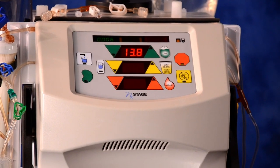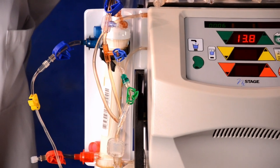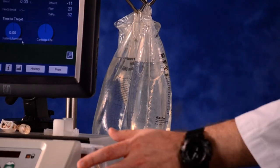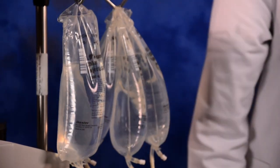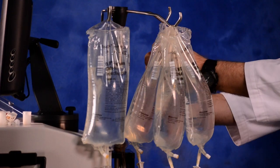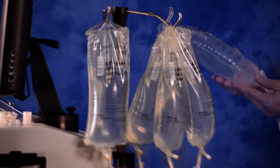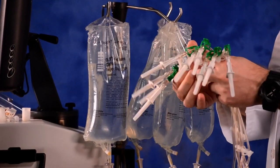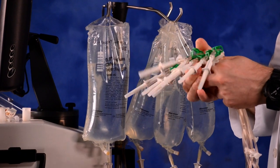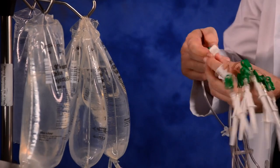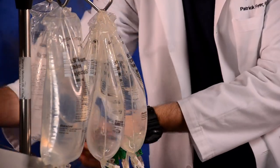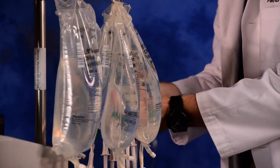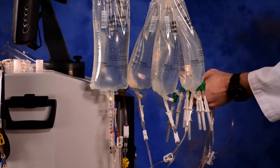While waiting for prime and alarms test to continue, hang the therapy fluid, albumin or donor plasma, ordered by the physician on the IV pole. We are using normal saline for this demonstration. Clamp all the green end clamps on the therapy fluid MLA and connect to the therapy fluid. Prime the therapy MLA and clamp. Do not place into the fluid warmer. We will not be using the optional fluid warmer for this therapy.